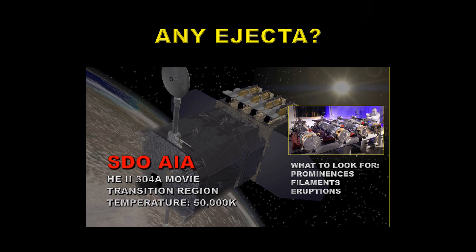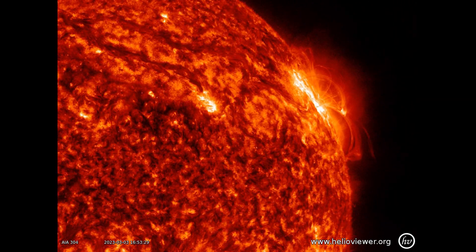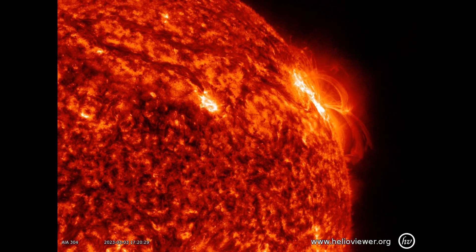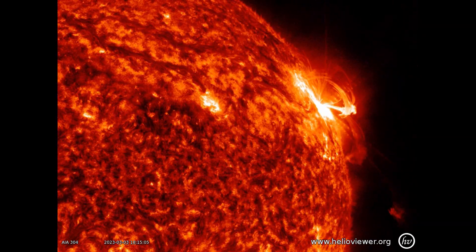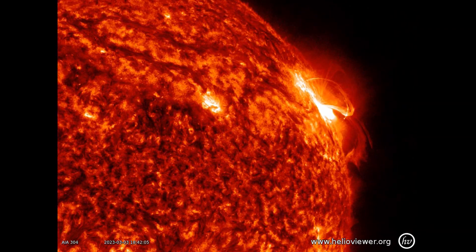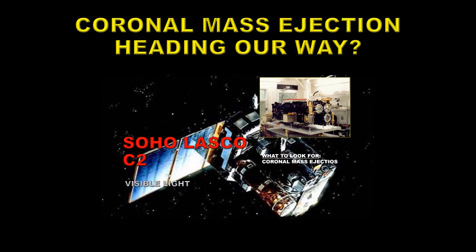One of the important questions is: are there any ejecta from this event? One of the best channels to look at that is the Helium 2 304 angstrom movie. That's a much cooler channel altogether, at 50,000 degrees Kelvin. What we're looking for is prominences and filaments erupting away from the Sun. We saw from that last movie that there was ejecta from this region and it went to the southwest.